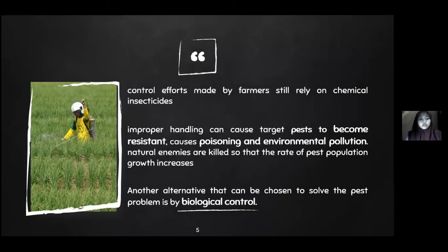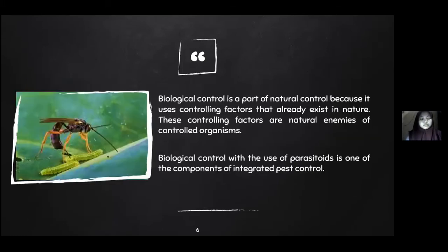Control efforts made by farmers still rely on chemical insecticides. Improper handling can cause target pests to become resistant, causing poisoning and environmental pollution. Natural enemies are killed so that the rate of pest population growth increases. Another alternative that can be chosen to solve the pest problem is biological control.